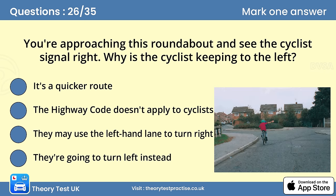Question 26. You're approaching this roundabout and see the cyclist signal right. Why is the cyclist keeping to the left? They may use the left-hand lane to turn right. Cycling in today's heavy traffic can be hazardous. Some cyclists might not feel happy about crossing the path of traffic to take up a position in an outside lane. Be aware that, although they're in the left-hand lane, the cyclist might be turning right.